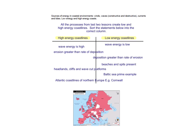High energy and low energy coastlines are phrases you'll see quite a bit in geography. At a high energy coastline, wave energy is high, erosion is likely to be greater, and you'd expect to see headlands, cliffs, and wave-cut platforms — the Atlantic coastline of Northern Europe being the best example. At low energy coastlines, wave energy is typically lower, deposition is greater, and you'd expect beaches and spits — the Baltic Sea is the best example.